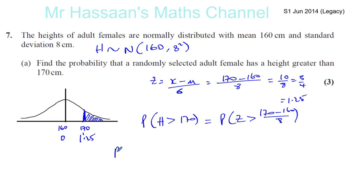Okay, which is the same as the probability that Z is greater than 1.25. Okay, now, the problem with this is if I go to the Z value for 1.25.